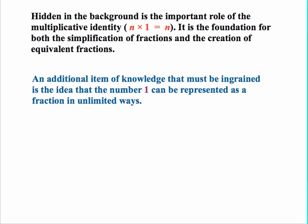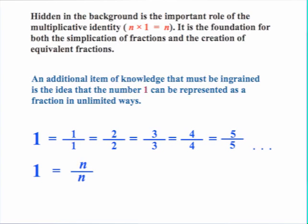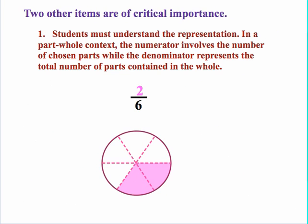An additional item of knowledge that must be ingrained is the idea that the number 1 can be represented as a fraction in unlimited ways — for example, 1 over 1, 2 over 2, 3 over 3, 4 over 4, 5 over 5, and so on. Students must understand that any number over itself equals 1. Students must also understand the fraction representation: in most part-whole contexts, the numerator represents the number of chosen parts, while the denominator represents the total number of parts contained in the whole.